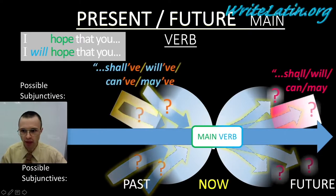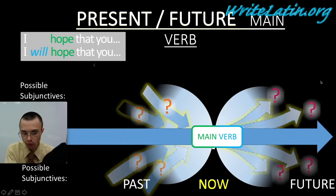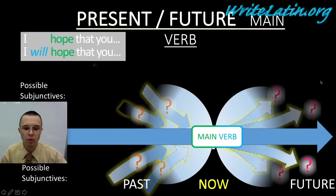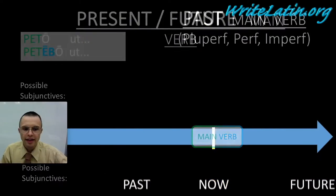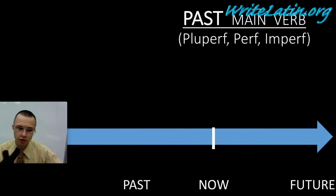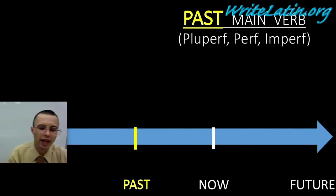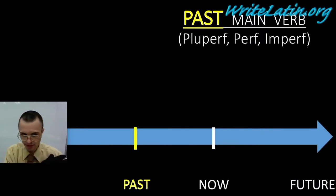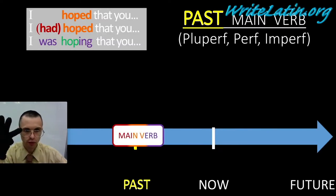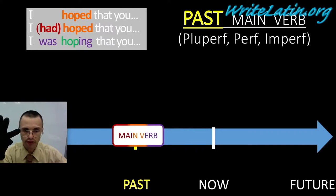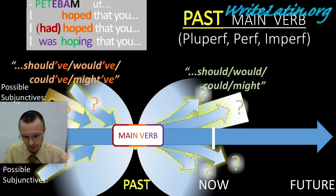It will be either shall, will, can, or may itself if it's forward-looking, or shall, will, can, may have if it's backward-looking. The second situation is when we have a past tense main verb — any of the three past tenses you know already: perfect, like 'I hoped that you'; pluperfect, like 'I had hoped that you'; and imperfect, like 'I was hoping that you.'